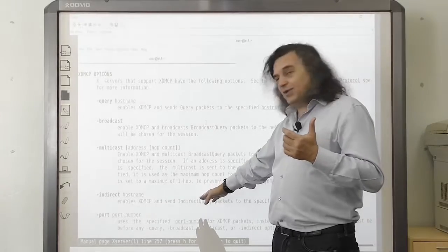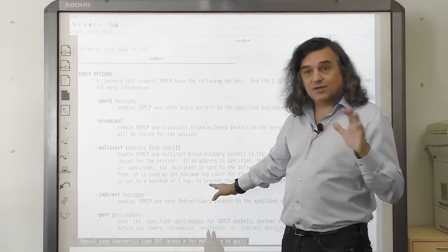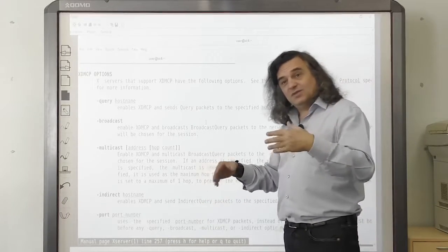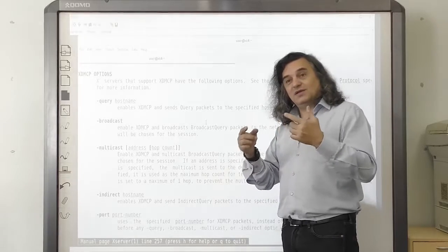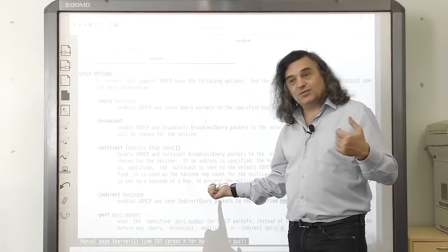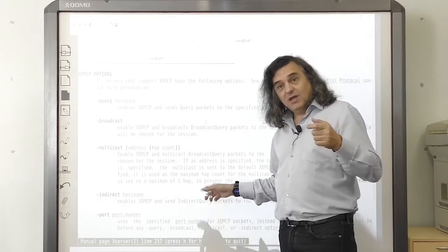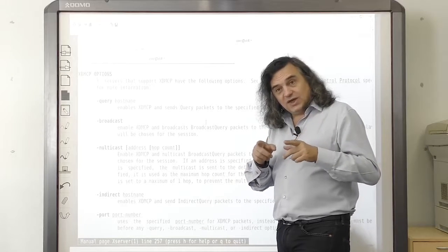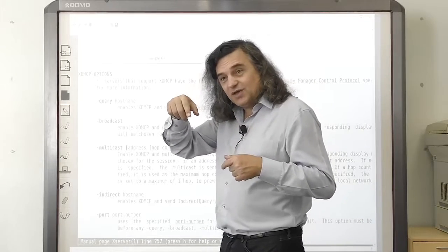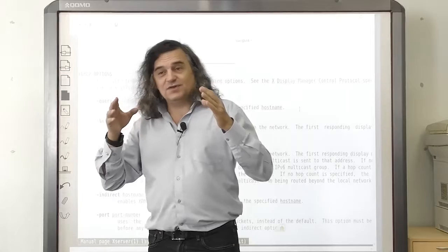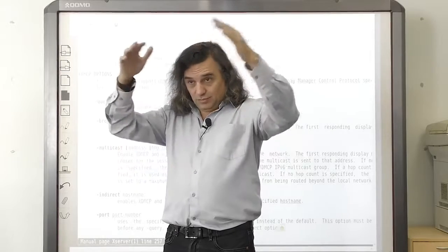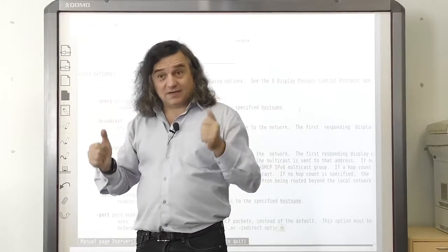And finally, indirect hostname enables X-DMCP and sends indirect query packets to the specified hostname. In this case, you will see a list of available application servers on your client that you can select.